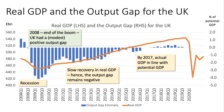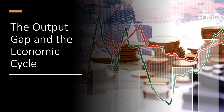The output gap will almost certainly become negative again given such a large fall in actual GDP, but we don't yet know what the consequences of the coronavirus pandemic might be for the level of potential national output. So estimates for the output gap at the moment are shrouded in plenty of uncertainty. Hopefully that made sense — this video has looked at the concept of the output gap and linked it, using AD/AS analysis, to the economic cycle.